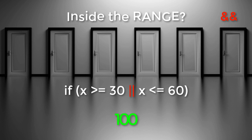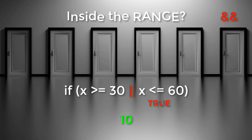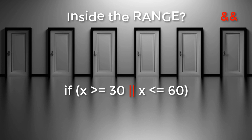So a value of 100 would make the left side true and the value of 10 would make the right side true. Can you see that we cannot use the OR to check for values inside a range?